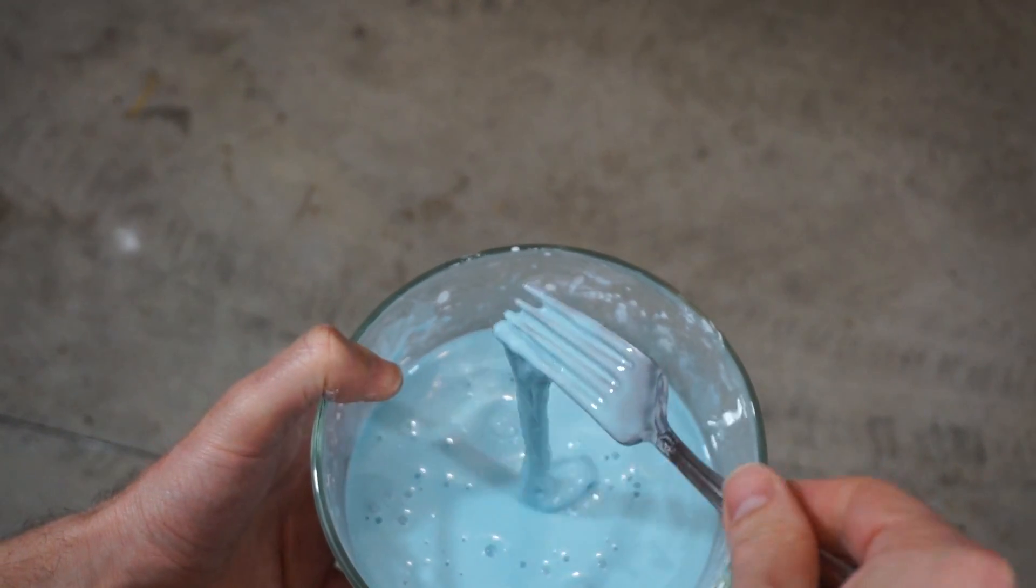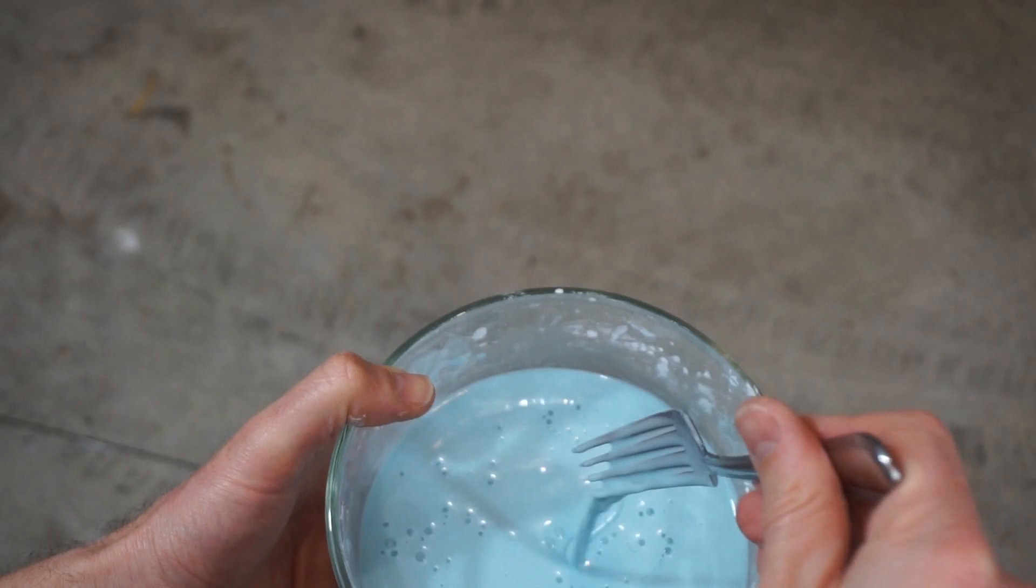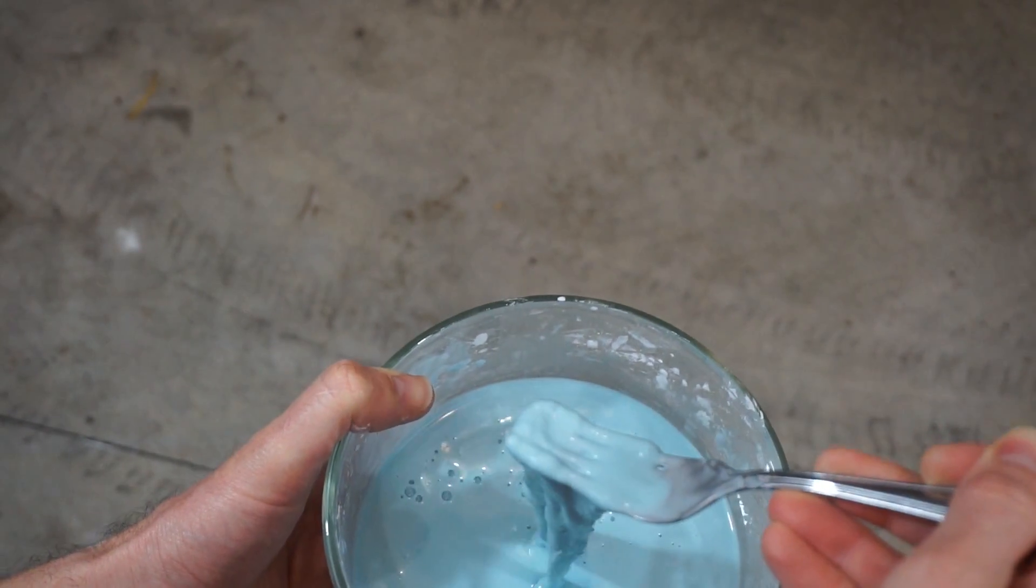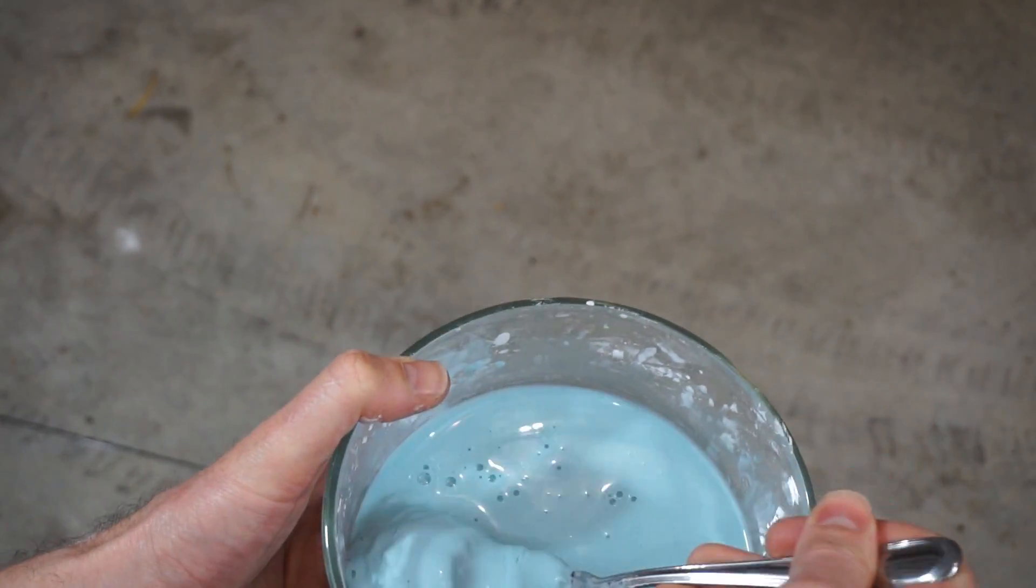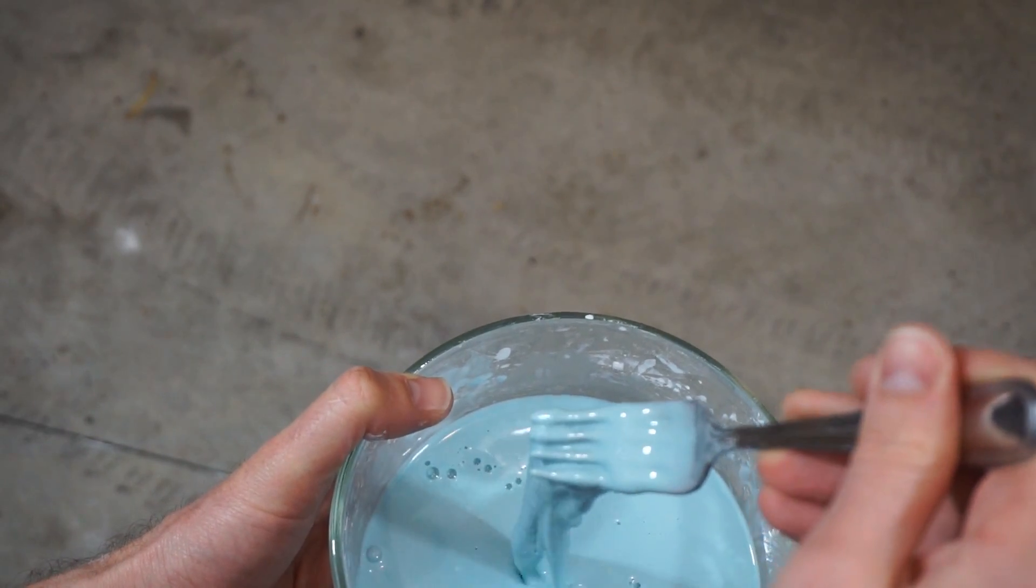So when we shoot a 500 mile per hour ping pong ball at it, I want to see how much like a solid it acts. I'm guessing it won't be like hitting a liquid at all, it'll just look like hitting a solid.